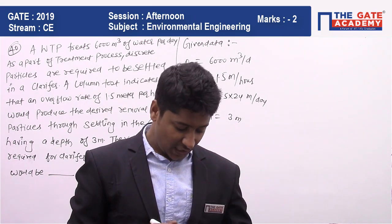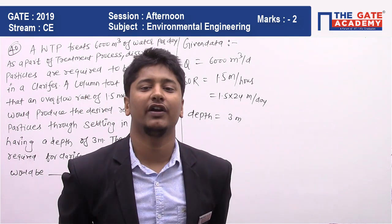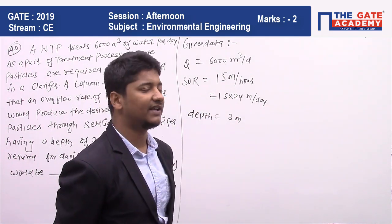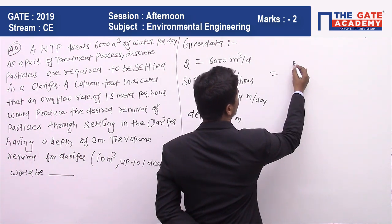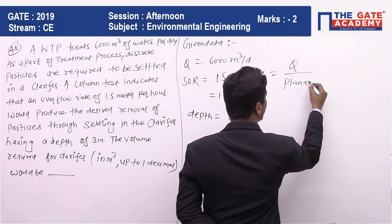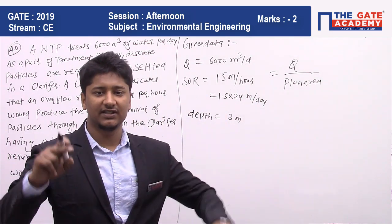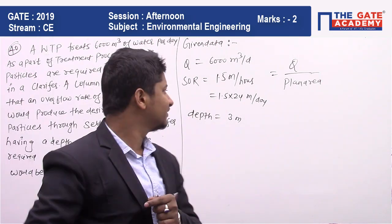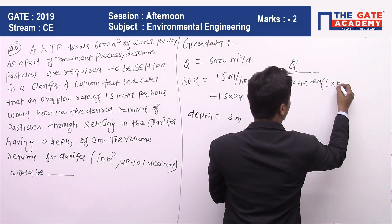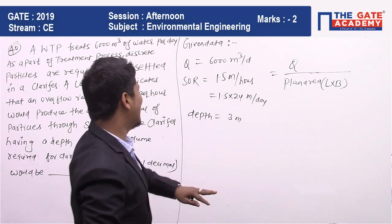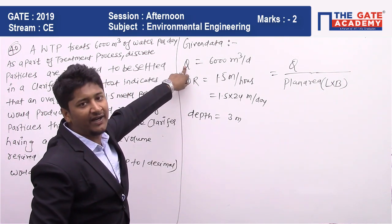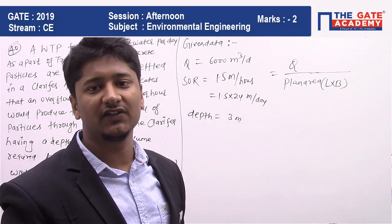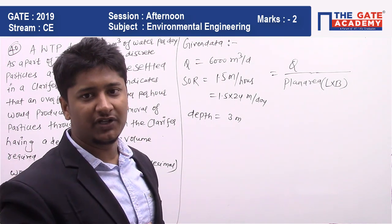Surface overflow rate is nothing but discharge upon plan area of the clarifier. If you look at the clarifier, it has a height, a length, and a width. The plan area is the top area, that is L × B. So you have SOR and you have Q, and by using this you can find the plan area. If you have the plan area and the depth, you can easily find the volume of the clarifier. That is the approach we are going to use.